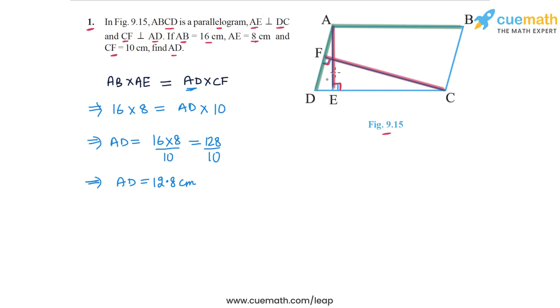And once again, let me recap what we did. AB is known, 16 cm. AE is known, 8 cm. So the area of the parallelogram is 16 into 8. Also, the area of the parallelogram can be written as AD, which is not known and which is what we have to find, into CF, which is known. So by equating the two expressions for the areas, we can get the value of AD. This completes question number 1.